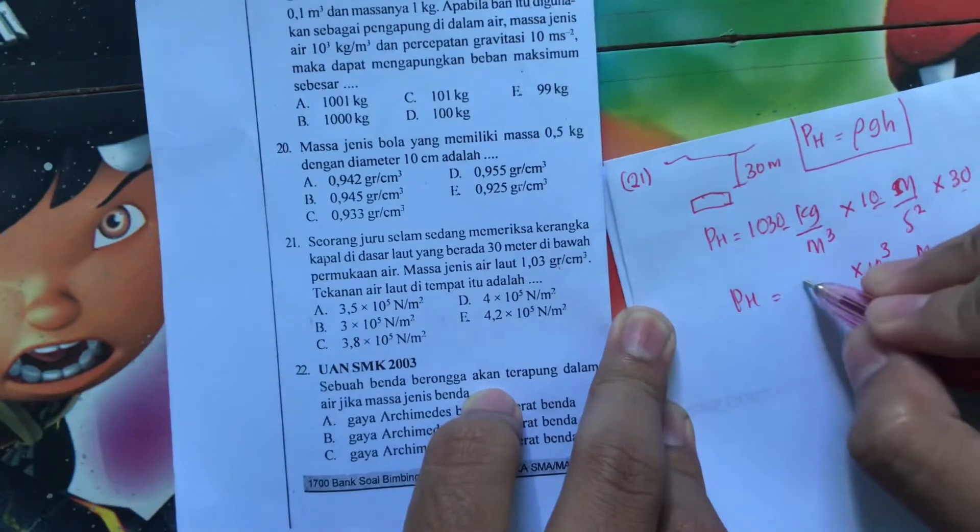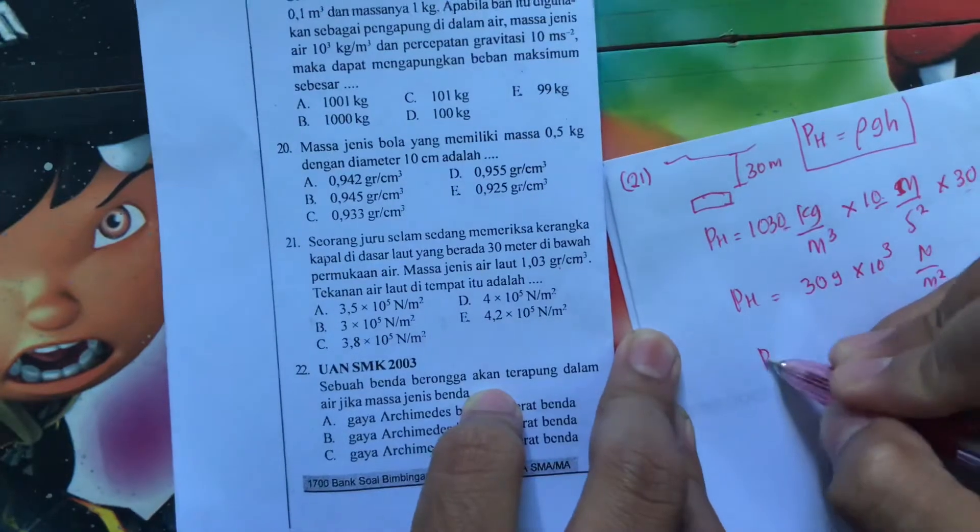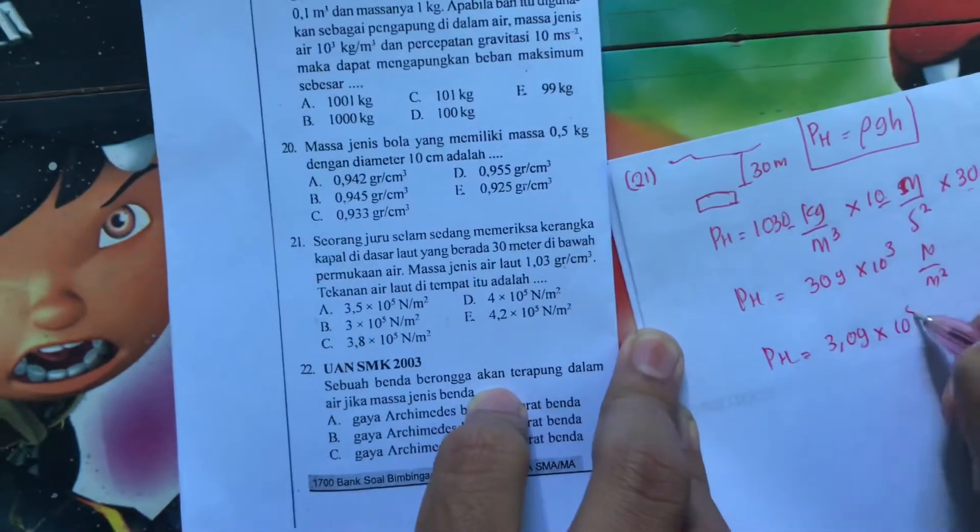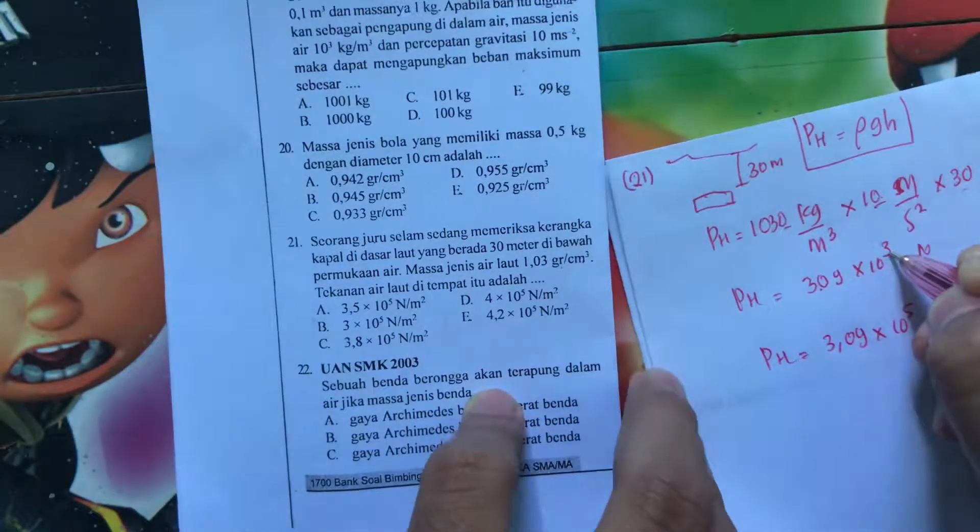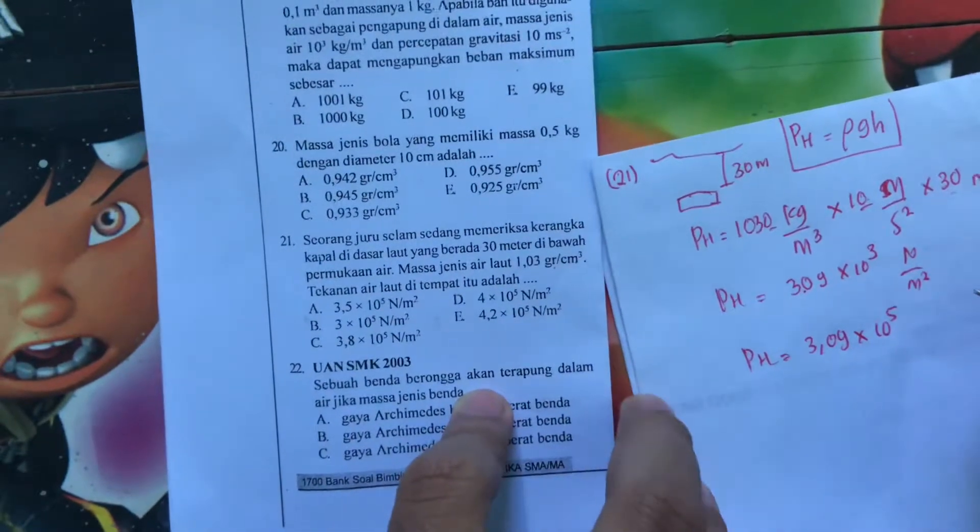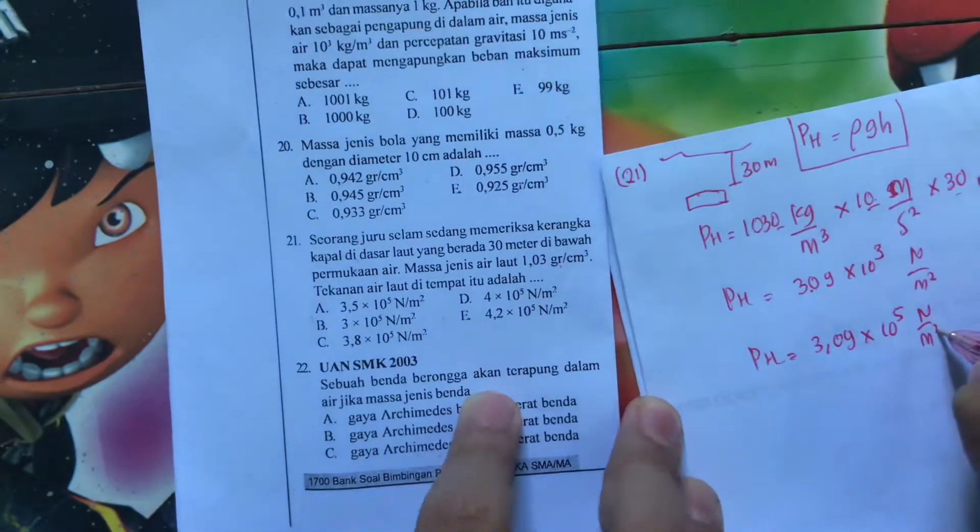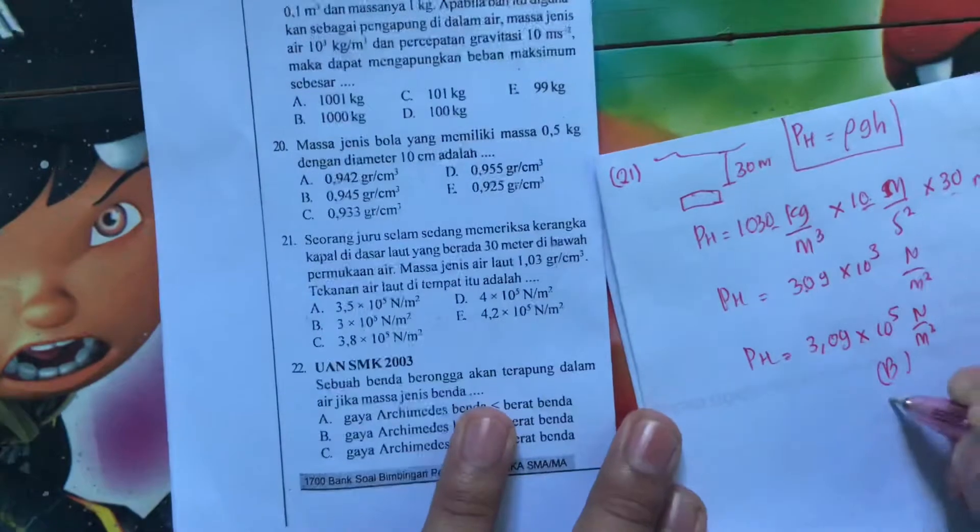103 kali 3 berarti berapa? 309. Berarti boleh kita tulis. Jadi, 3,09 kali 10 pangkat lima. Ini kita majuin 2, berarti jadi tambah 2. Berarti satuannya adalah, jawabannya adalah 3,09 kali 10 pangkat 5 Newton per meter persegi atau paskal. Berarti jawabannya adalah yang beta.